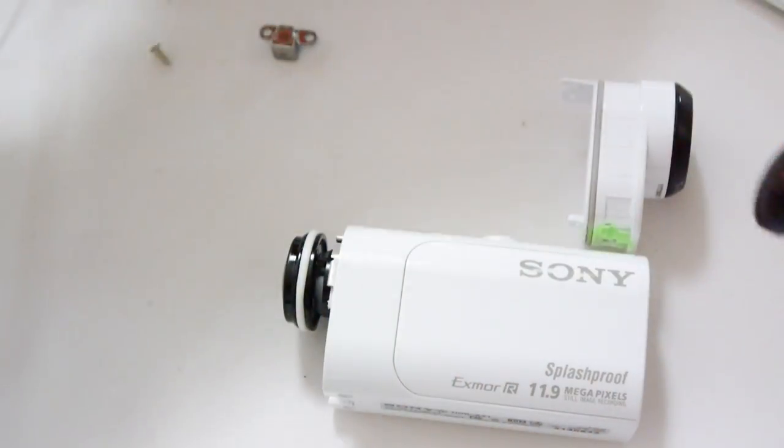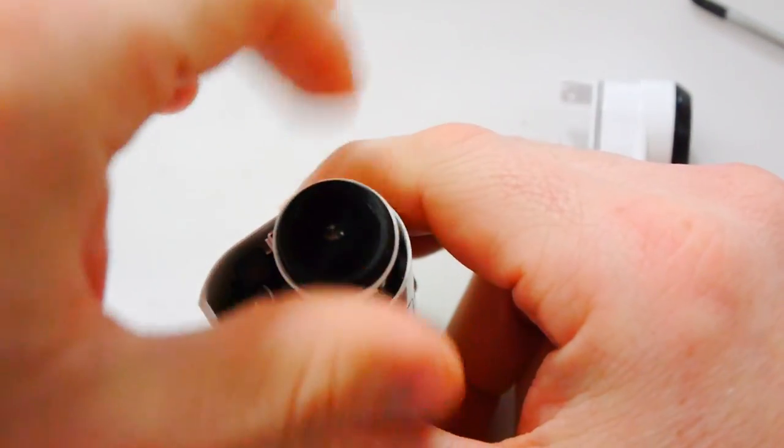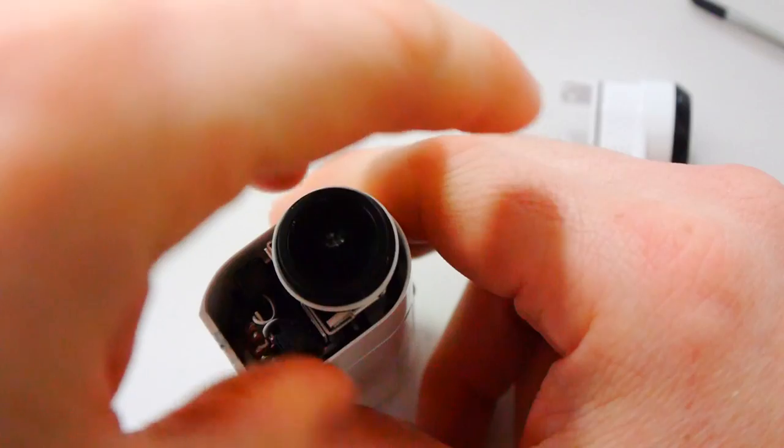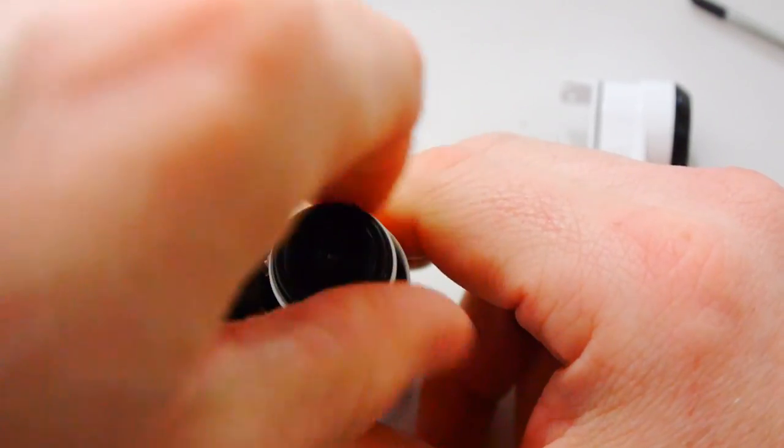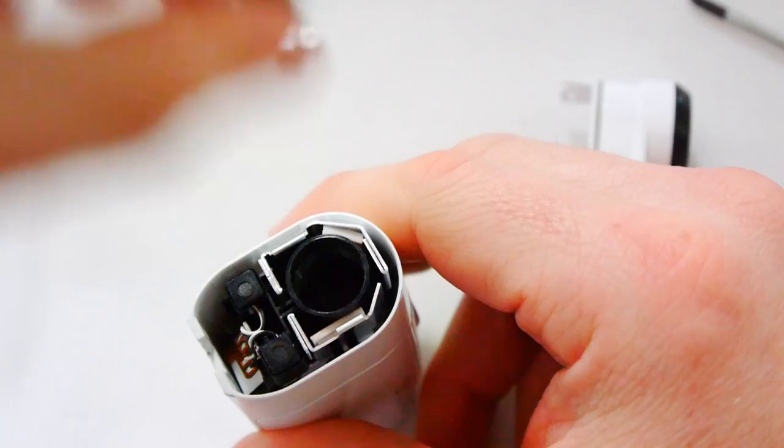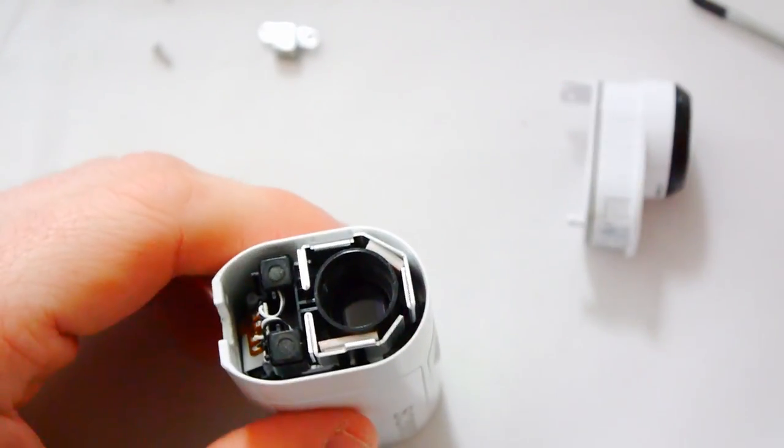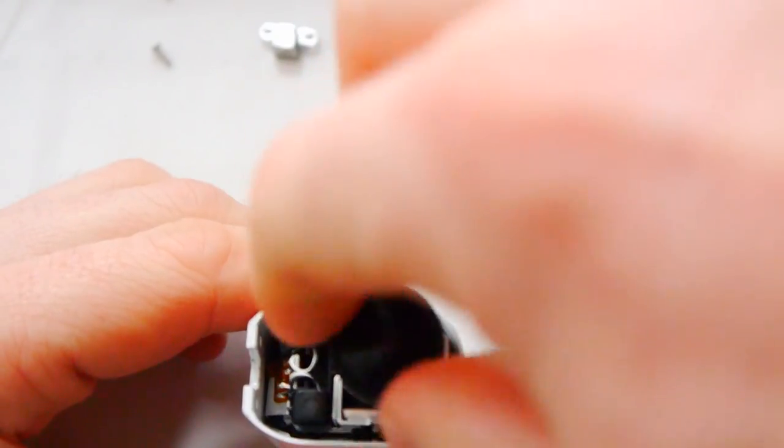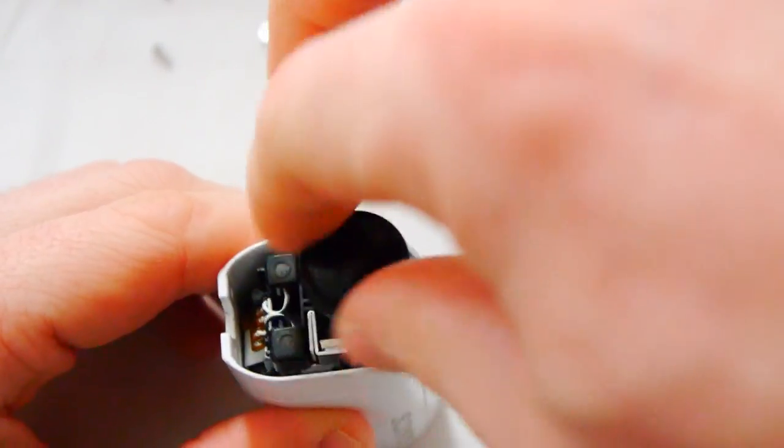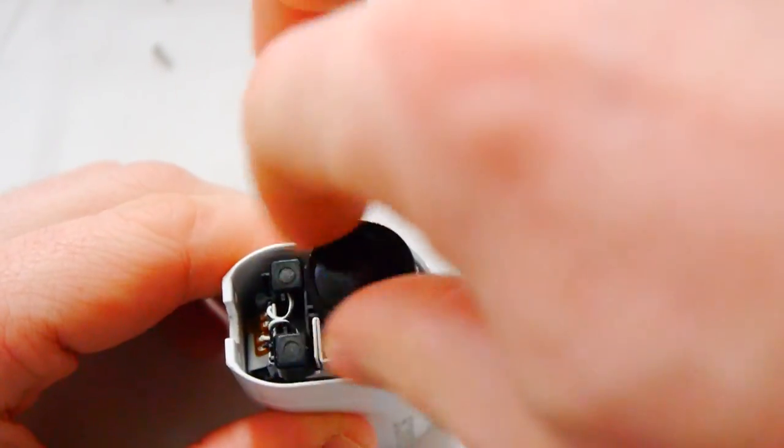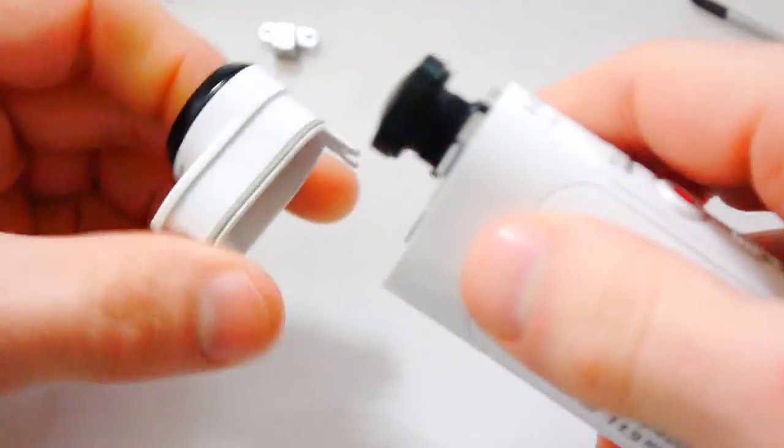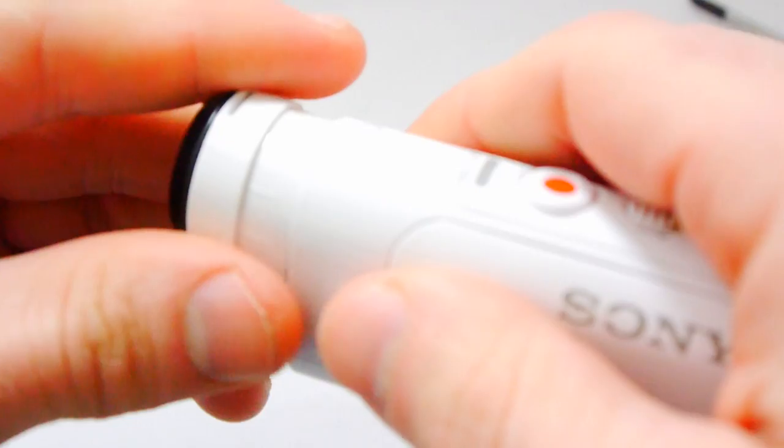So this is the replacement lens. All you do, unscrew the lens and screw this lens back on. And then you want to slide this above. And then you just kind of push it all back in.